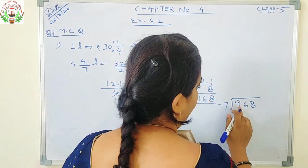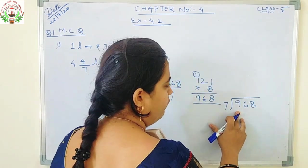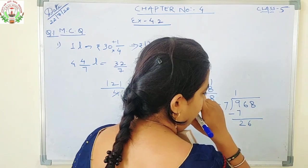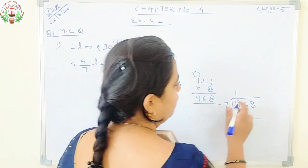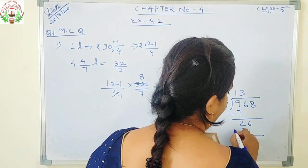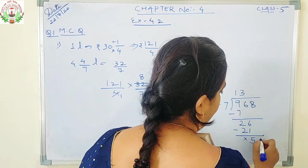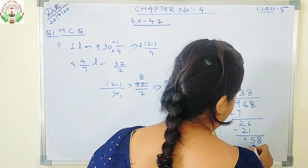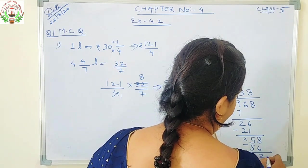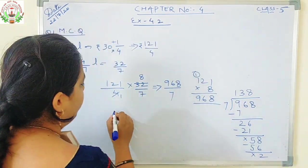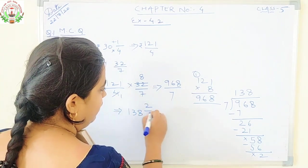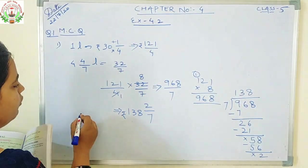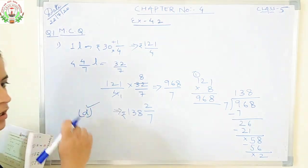Now divide 968 by 7. 9 is greater than 7: 7 ones are 7, 9 minus 7 is 2, bring down 6. 7 threes are 21, so 26 minus 21 is 5, bring down 8. 7 eights are 56, 58 minus 56 is 2. So the answer in mixed fraction — quotient remainder upon denominator — and this answer is given in option number D. So you will take option D for question number 1.